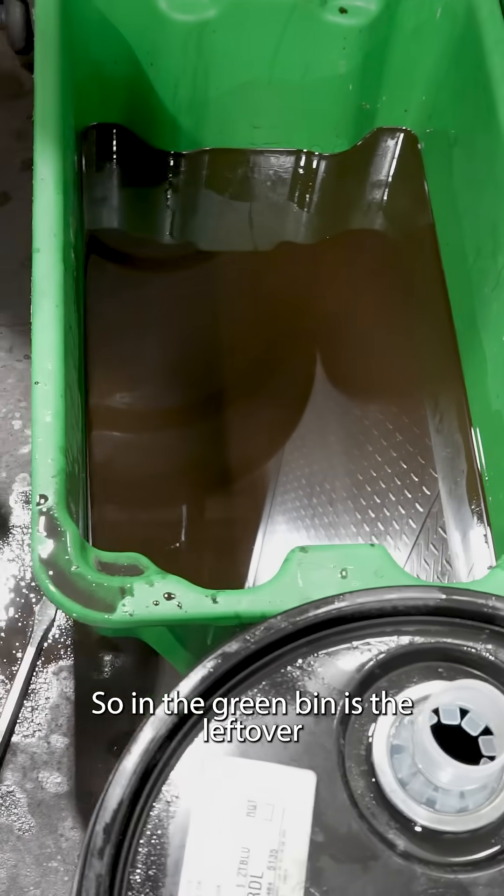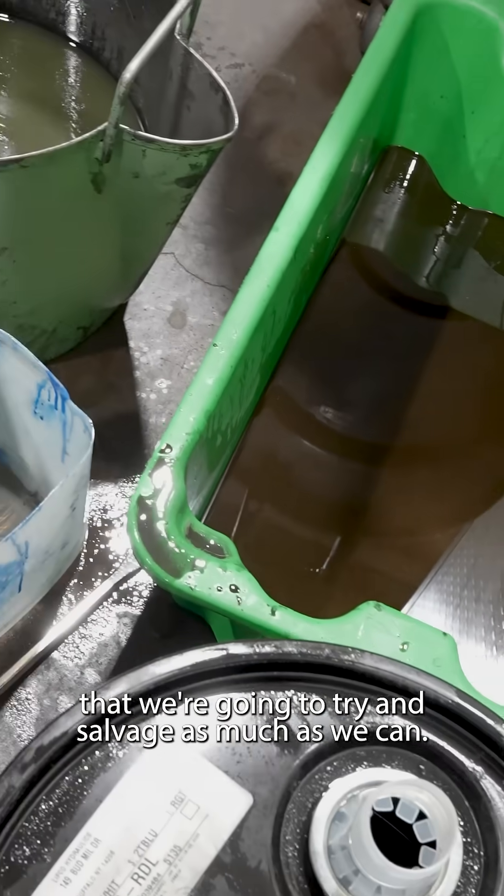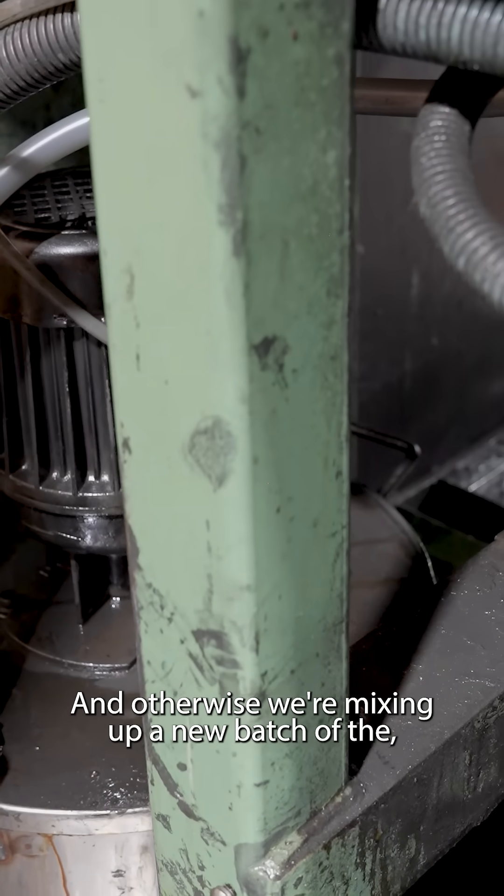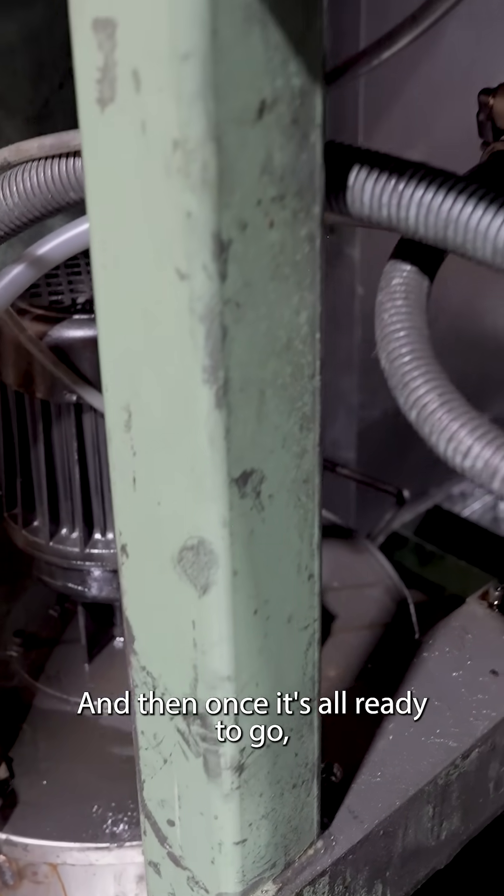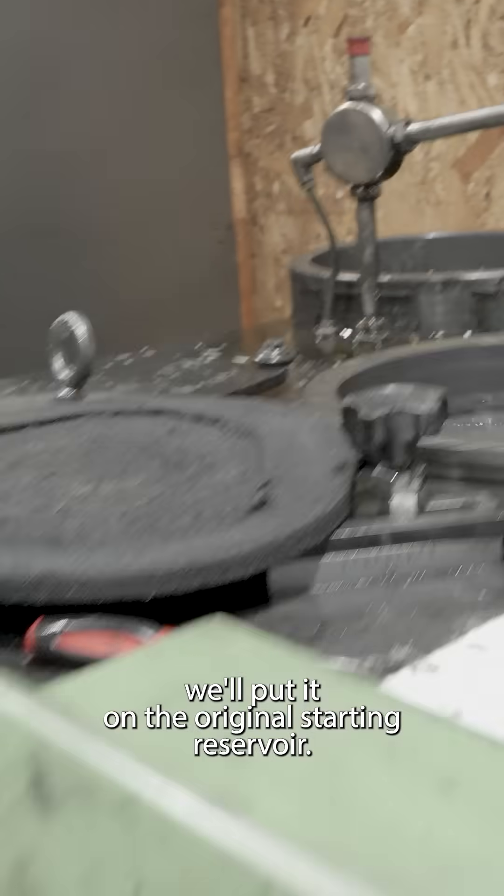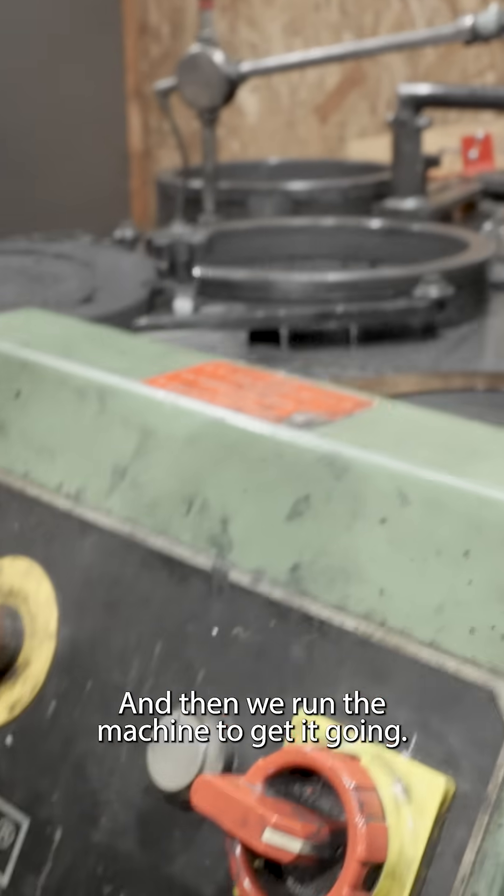So in the green bin is the leftover that we're going to try and salvage as much as we can. And otherwise, we're mixing up a new batch of the powdered aggregate with the fluid. And then once it's all ready to go, we'll put it in the original starting reservoir. And then we run the machine to get it going.